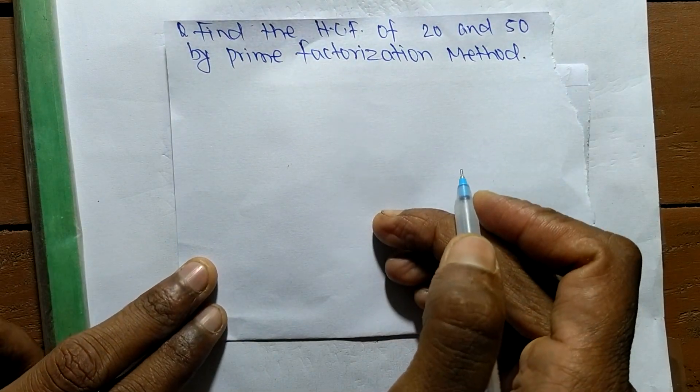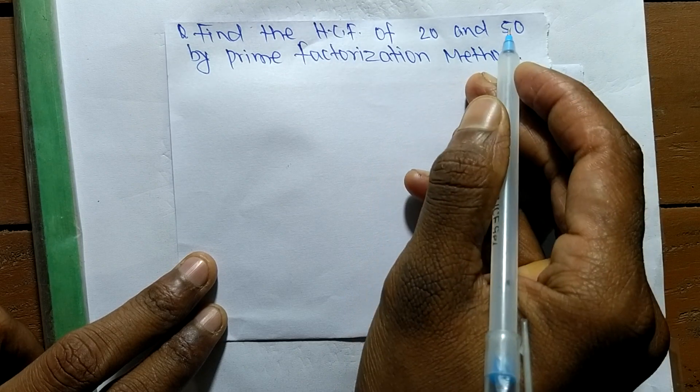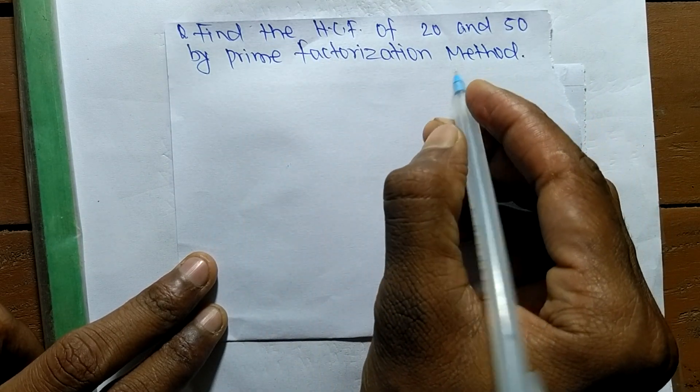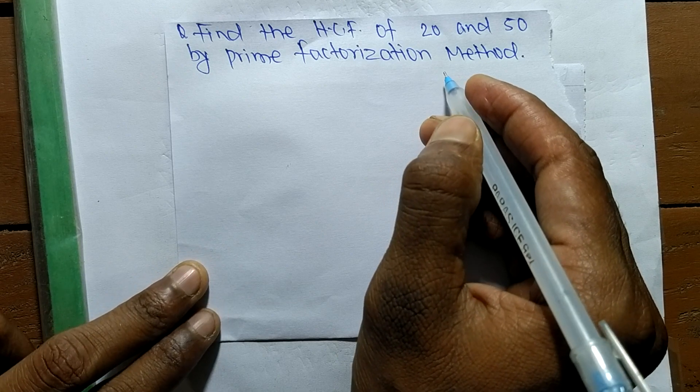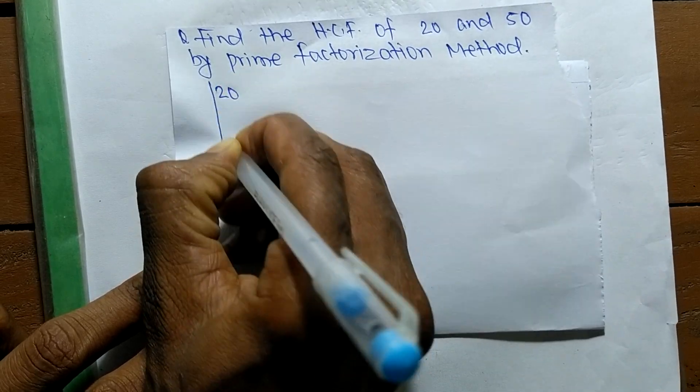So today in this video we shall learn to find the HCF of 20 and 50 by prime factorization method. In this method, first we fully find out the prime factors of 20 and 50.